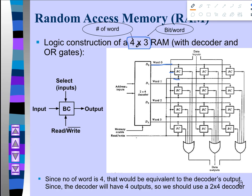To recap: the left part of the multiplication sign is number of words and the right part is bits per word. The number of words equals the decoder output count, so with 4 outputs the decoder has 2 inputs. For the bits per word — since there are three bits per word, we need three binary cells per word, connected on all sides. Data inputs and data outputs are each equal to the bits per word, so both equal 3.